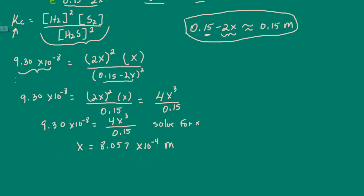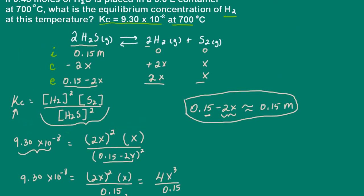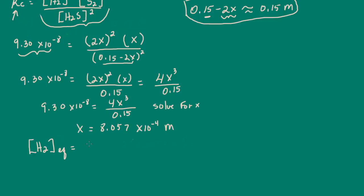Now I can determine the concentration of hydrogen at equilibrium. Going back to the table, the equilibrium concentration of hydrogen gas is 2 times X. So we have 2 times 8.057 times 10 to the negative 4 molar, which gives us 1.6 times 10 to the negative 3 molar.